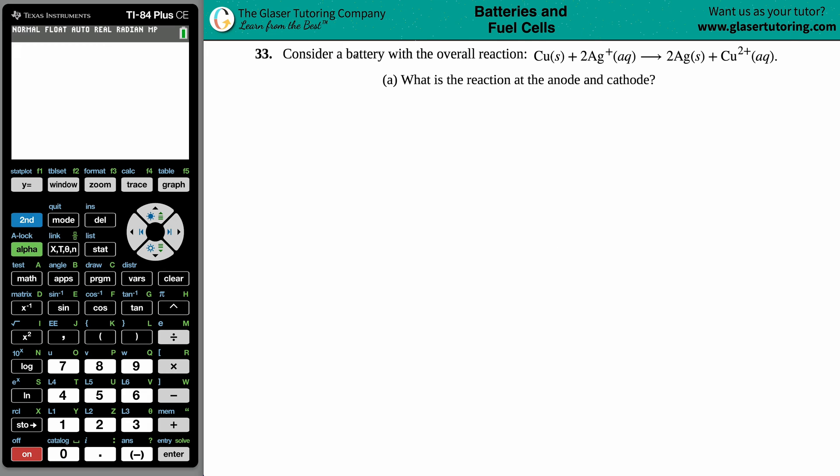Number 33. Consider a battery with an overall reaction of Cu solid plus 2Ag+ aqueous yields 2Ag solid plus Cu2+ aqueous. And then we have letter A. What is the reaction at the anode and the cathode?